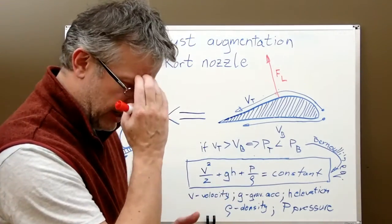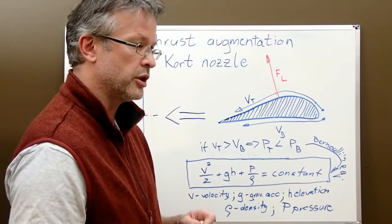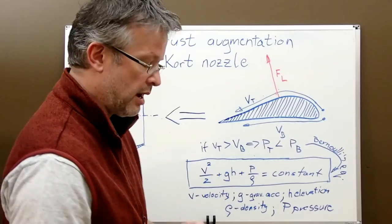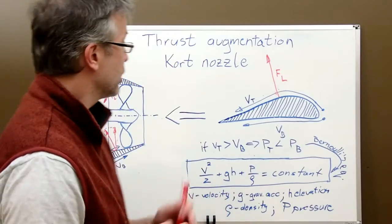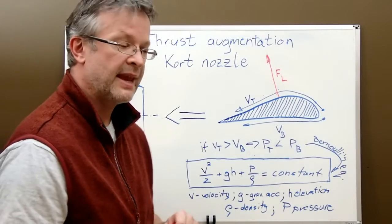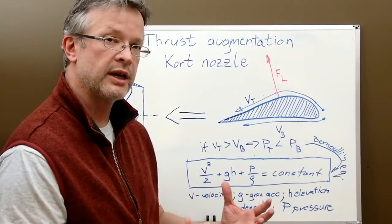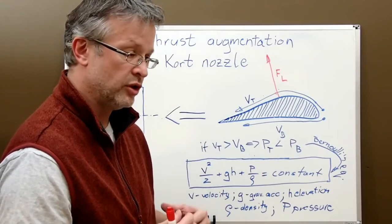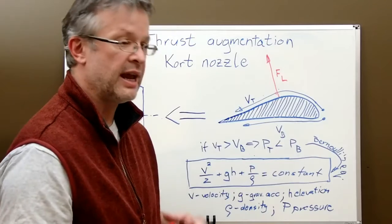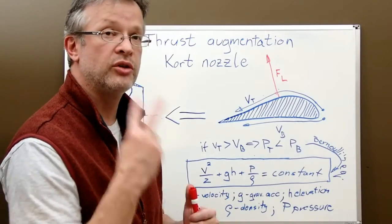So it was a kind of a longish introduction to those rims we have around propellers. They are actually called Kort nozzles. And the purpose of those nozzles is to improve the thrust, to add more thrust, and to make it more efficient. And it happens in two ways.